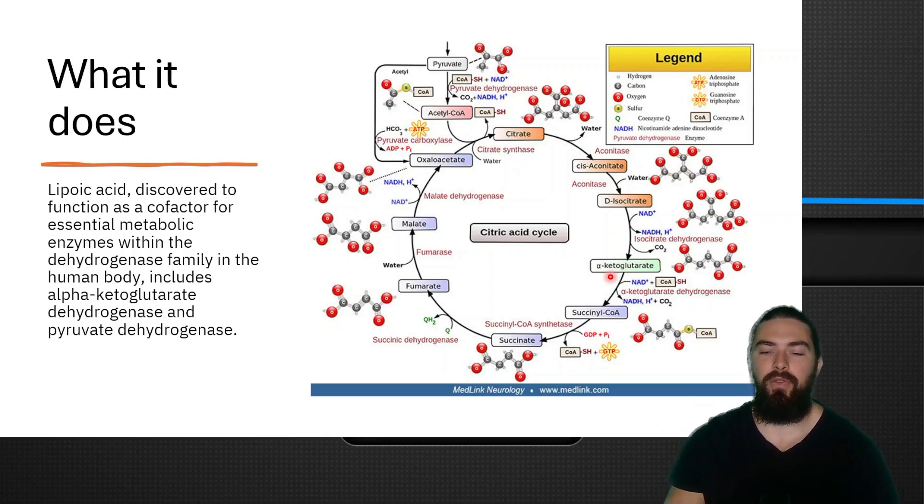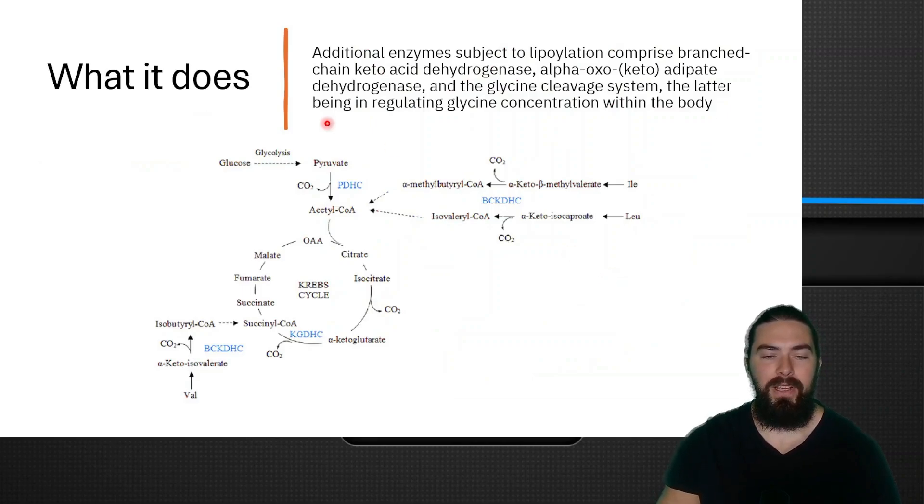Additional enzymes subject to lipoylation comprise branched-chain keto acid dehydrogenase, keto adipate dehydrogenase, alpha-oxo adipate dehydrogenase, and the glycine cleavage system, the latter being involved in regulating glycine concentration within the body. All of these are involved in protein or amino acid metabolism into acetyl-CoA, like isoleucine and leucine, which is converted to acetyl-CoA. So if you have low levels of alpha lipoic acid, you might struggle to break down and metabolize your amino acids properly. Clearly, it's very important.